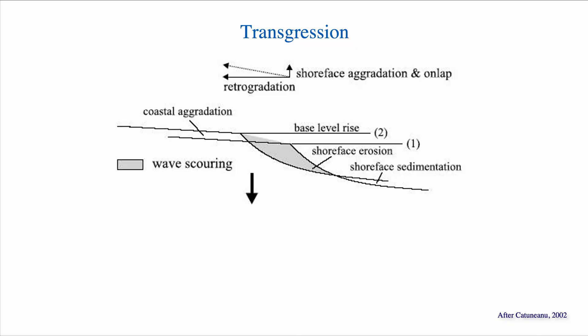The key to the answer is in wave energy. The problem is that the transgression will result in the beach faces migrating over a lot of the previous sediments. The issue with that is that the beach is, by definition, an erosive environment where sands are being eroded, transported, and redeposited. So you have a lot of wave scouring or wave erosion during a transgression.